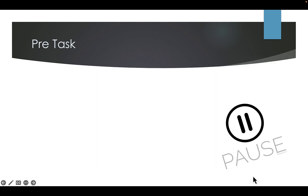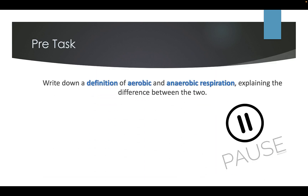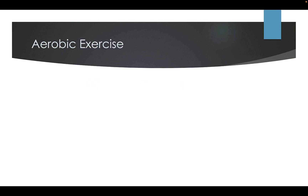The neuromuscular system. Pre-task: write down the definition of aerobic and anaerobic respiration, explaining the difference between the two. Pause the video until you've done this.